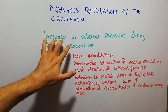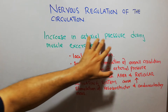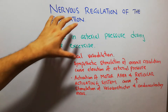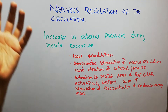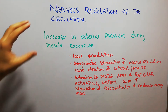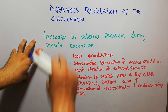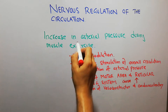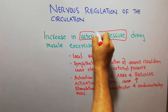Today in this lecture we are going to discuss how the nervous system increases arterial pressure during muscle exercise. We are discussing a series of lectures about the nervous regulation of circulation. In the last lecture we discussed how the nervous system increases arterial pressure rapidly, and now we are discussing how it increases arterial pressure specifically during exercise.